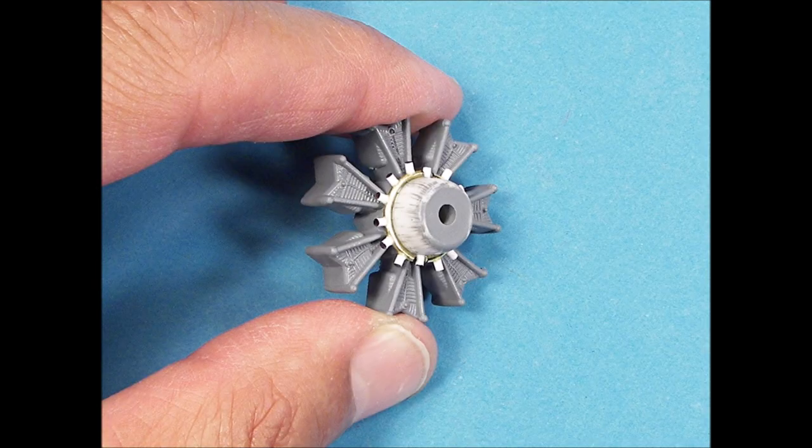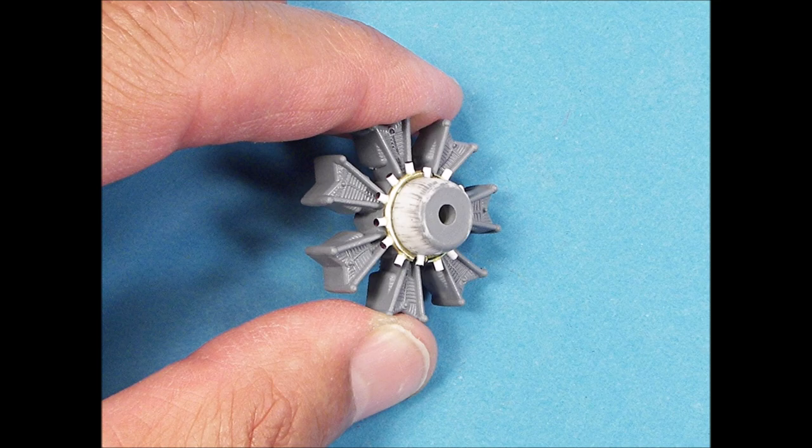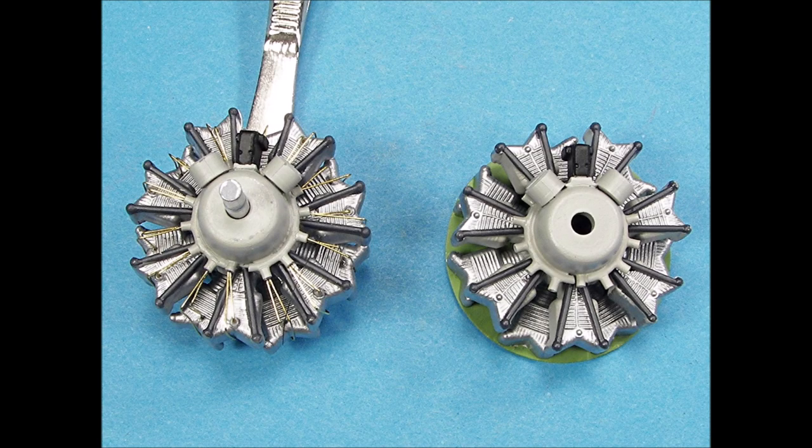The wiring stubs were cut to length with my trusty Northwest Short Line chopper. The ends were painted black with an indelible marker to make it easier to drill them out to accept the wiring. The engine on the left has its wiring added along with the piston rods. I also added magnetos from my spare parts box.